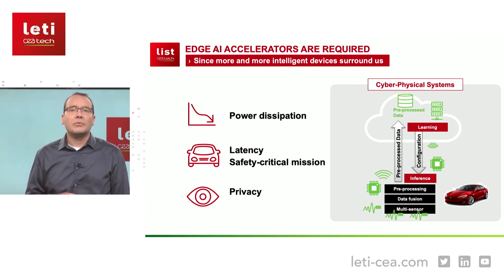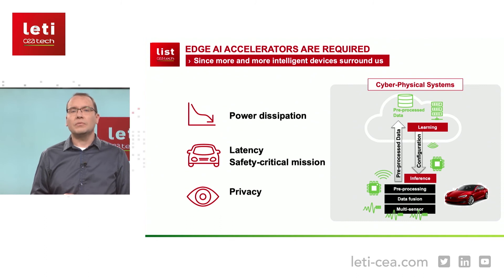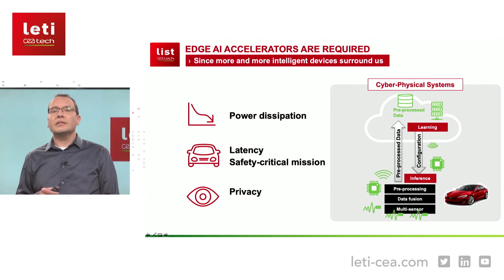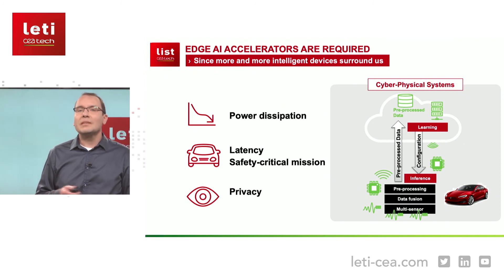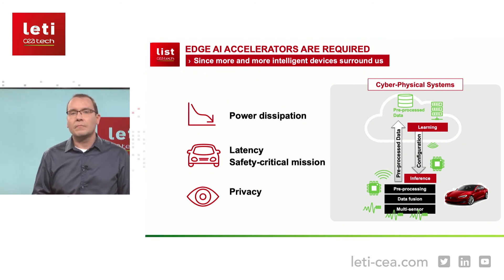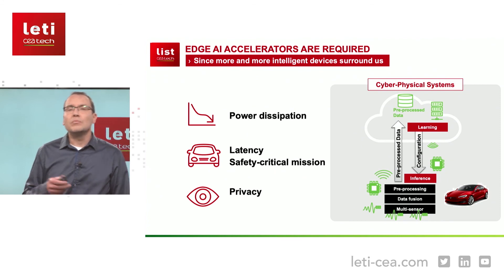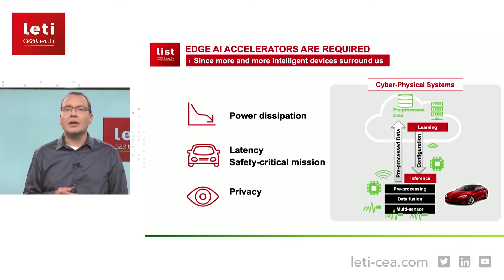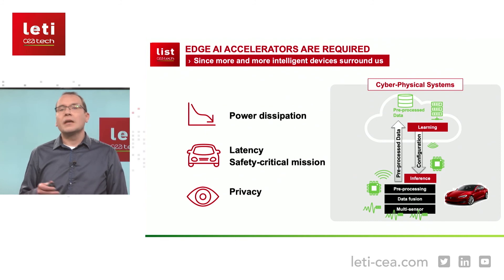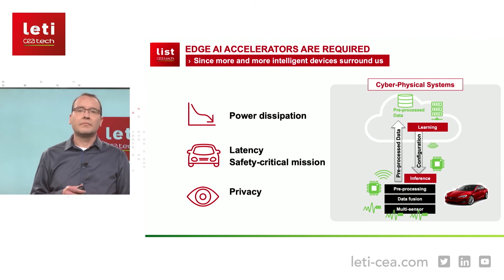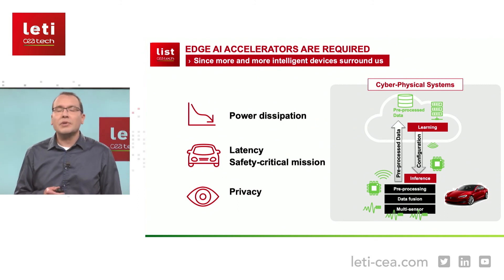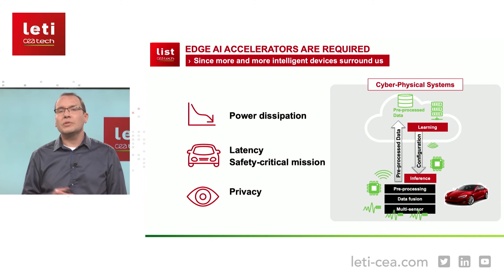There are other reasons apart from the obvious power dissipation issue. One is latency — the latency of decision-making is obviously much shorter when done locally. Another one concerns the safety of operation: you might not want to constantly rely on a wireless connection, say if you want an autonomous car to brake at the right time. And finally, there are privacy reasons — you keep your data local to keep them private.